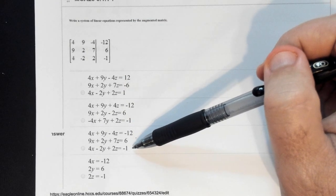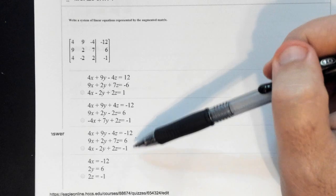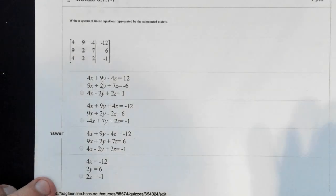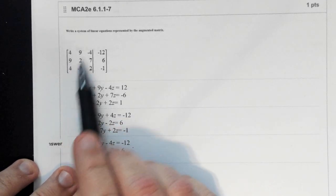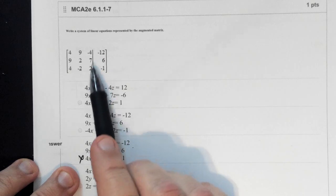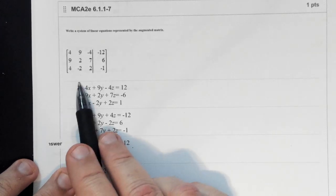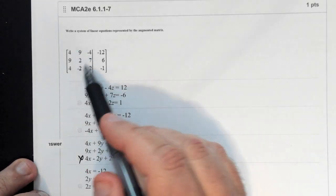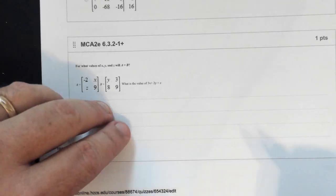This would probably be one of the questions where you're not going to show a whole lot of work on your submitted paperwork. Notice your signs — there's a negative in front, don't forget the equal sign. If there's a zero in an entry, you can leave out that variable, but they should all match up.